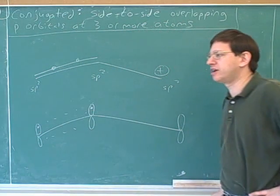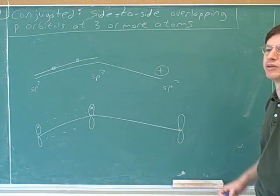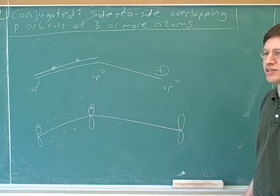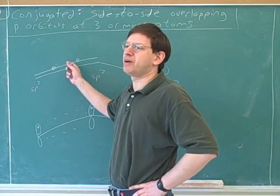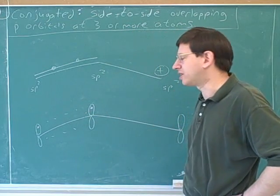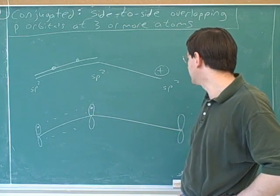The pi electrons are the electrons in the side-to-side overlapping p orbitals. That was the definition that was in that other series of videos. Of course, we knew these are pi electrons because they're in a pi bond. But the more general definition is that they're side-to-side overlapping p orbitals. That makes them pi electrons.